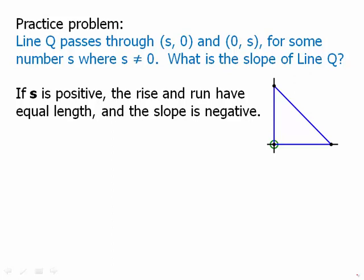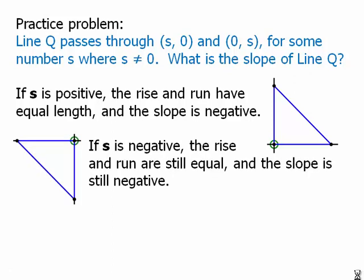If s is negative, we get something very similar — a triangle in the third quadrant. We've gone in a negative direction along both the x-axis and y-axis. Again, the rise and run have equal absolute magnitude, so that ratio is one, but it's negative, giving negative one. Notice both of these triangles are 45-45-90 triangles, and a slope of positive or negative one always produces a 45-45-90 triangle. This line obviously has a negative slope, so the slope must be negative one.